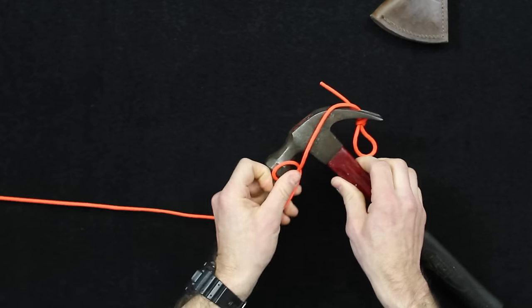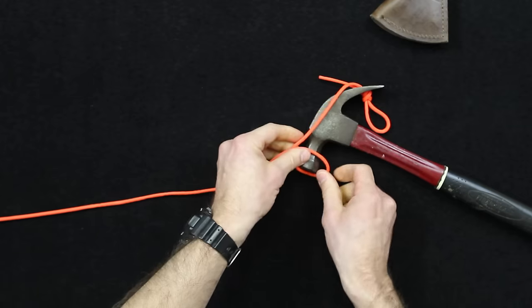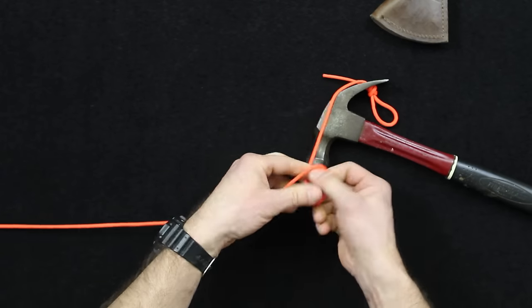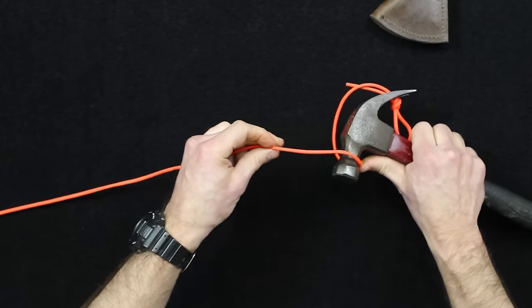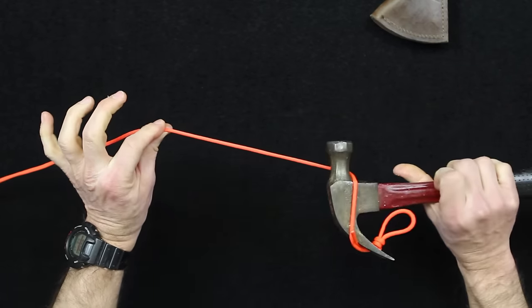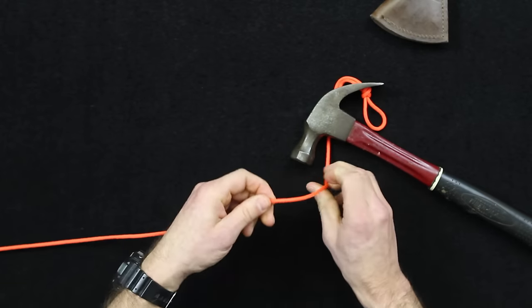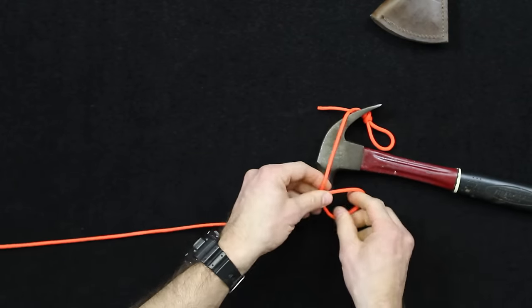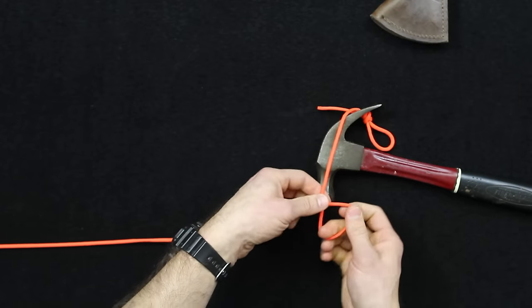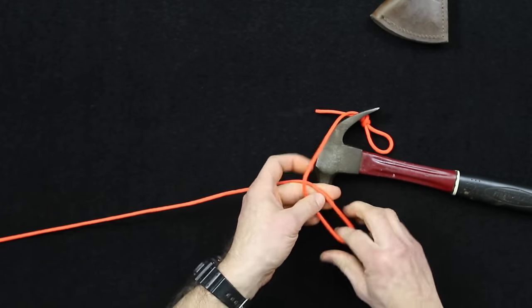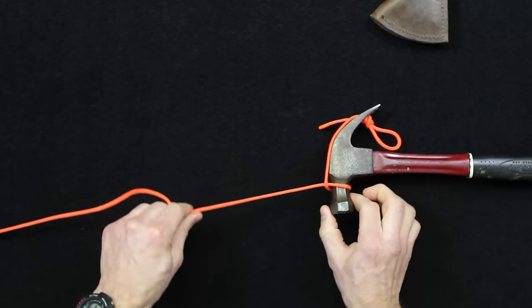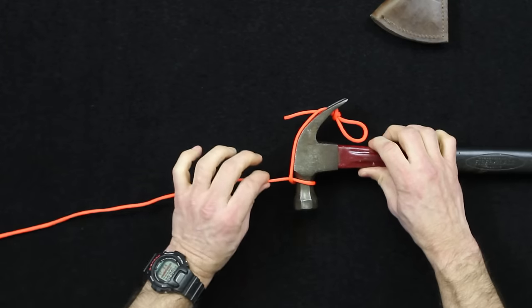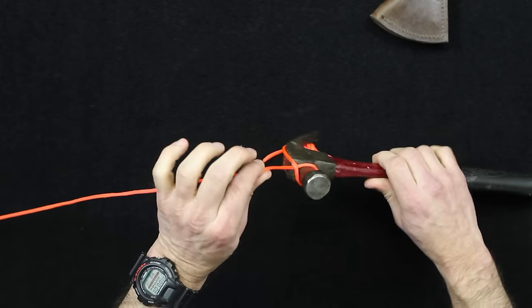So as you saw there I twisted the wrong direction and that's important too. If you twist the wrong direction what happens is that this just falls out and you don't really get a good half hitch on there. So twisting the correct direction, it's a little hard to do this upside down, but twisting the correct direction is how you'd haul that there.